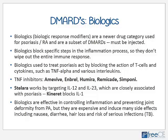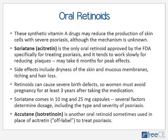Biologics used to treat psoriasis act specifically by blocking the action of T-cells and cytokines such as TNF-alpha and various interleukins. The TNF inhibitors include Amevive, Enbrel, Humira, Remicade, and Simponi. Stelara is another biologic that works by targeting interleukin-12 and interleukin-23, which are very closely associated with psoriasis. Kineret is less effective, blocking interleukin-1, which is not as important in psoriasis as it would be in rheumatoid arthritis. Biologics are effective in controlling inflammation and preventing joint deformity but are quite expensive and do induce many side effects including severe nausea, diarrhea, hair loss, and risk of serious infections, particularly TB.